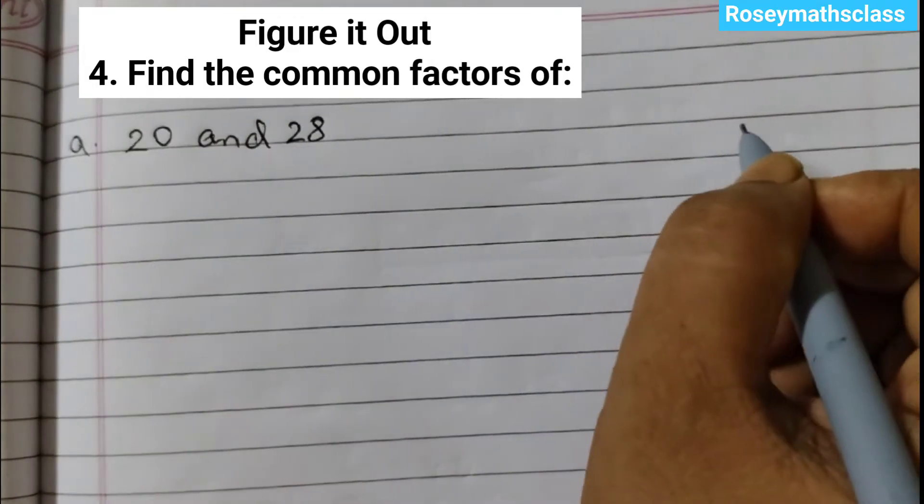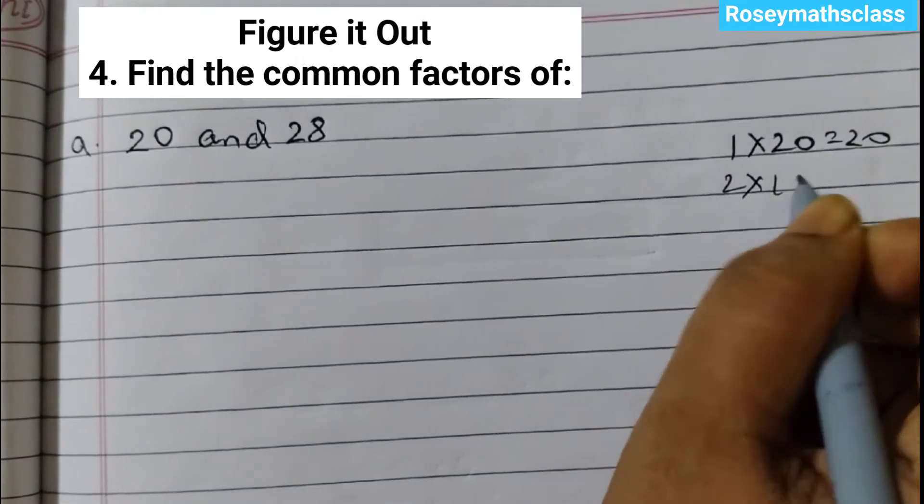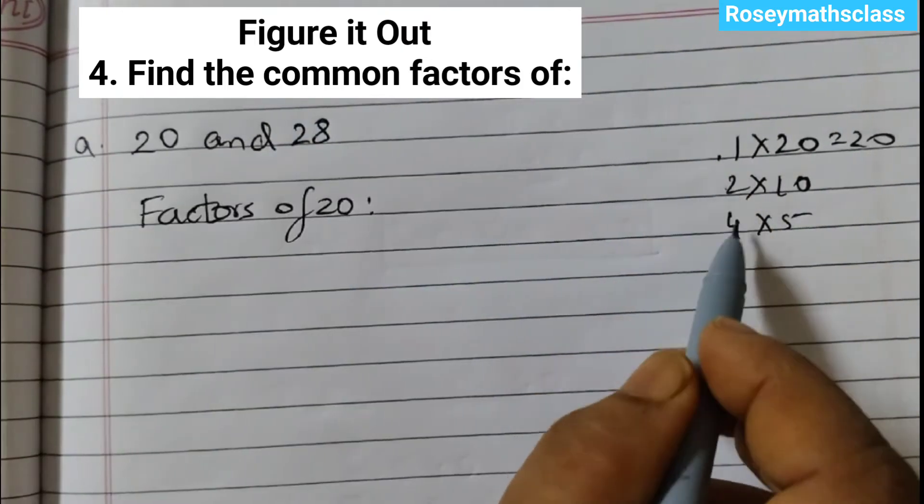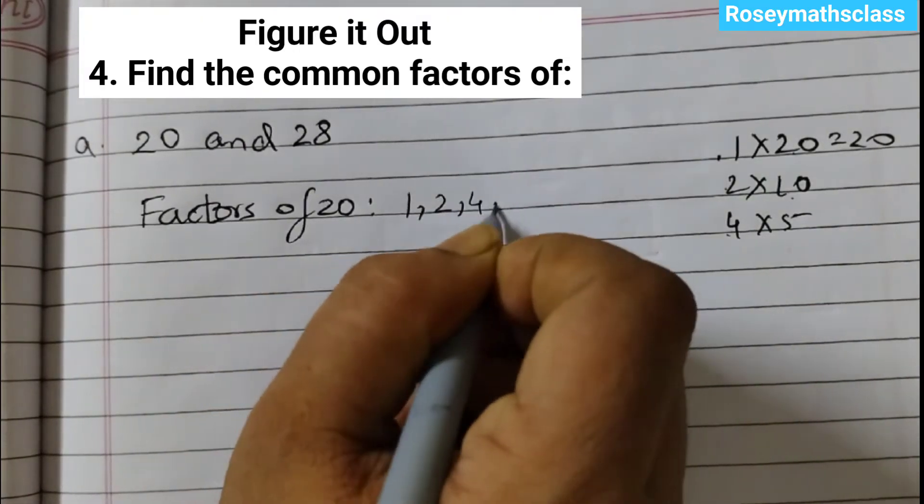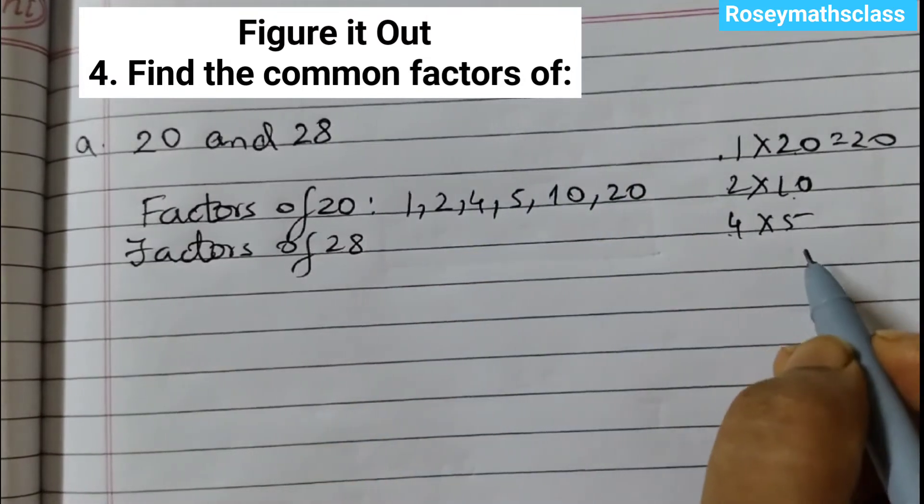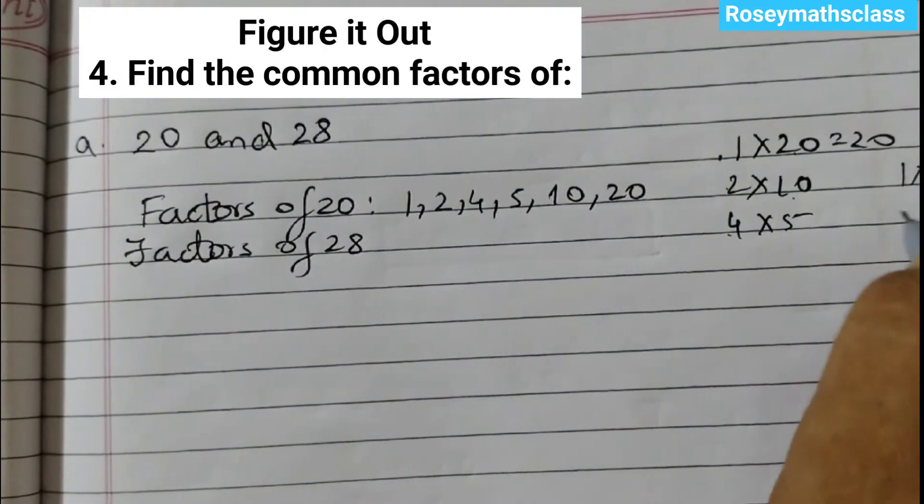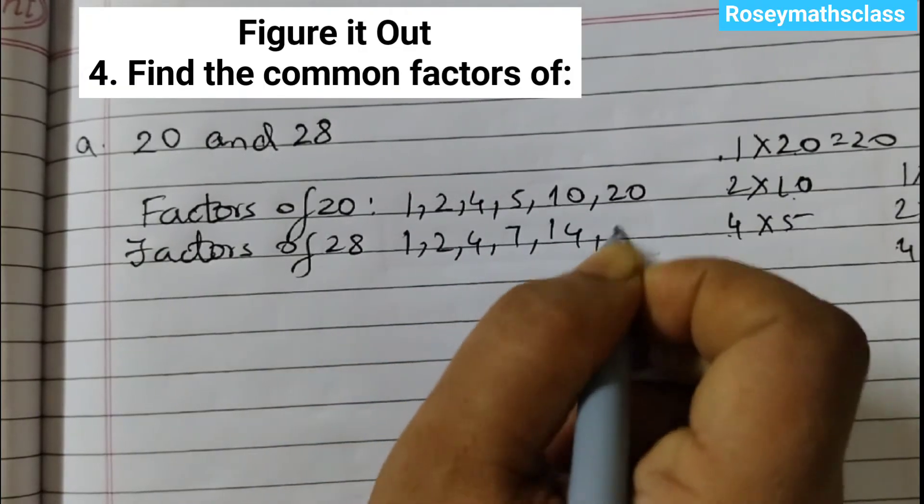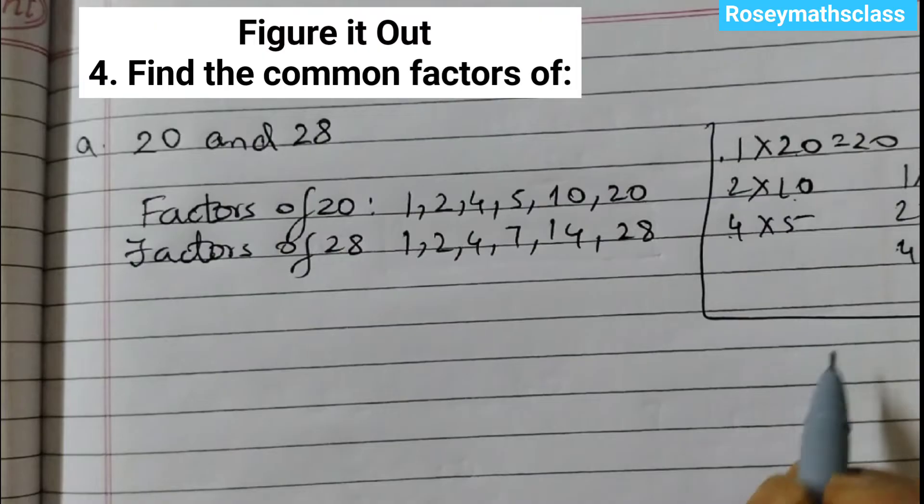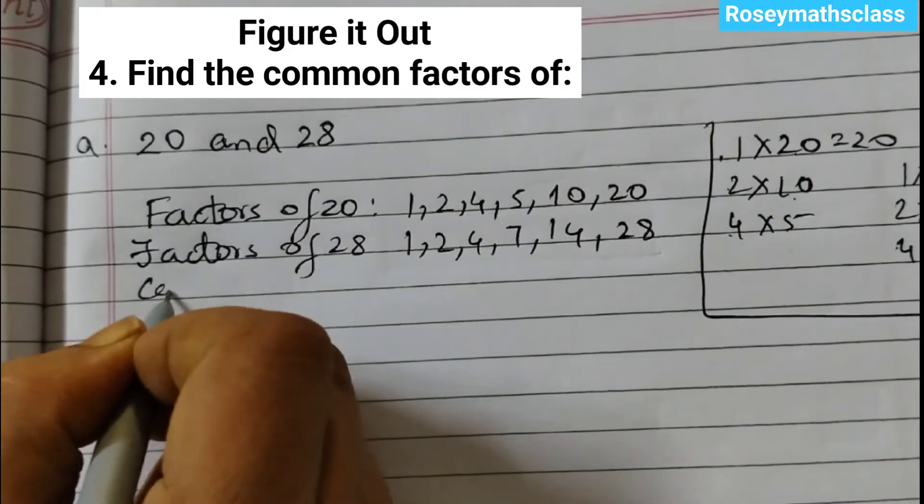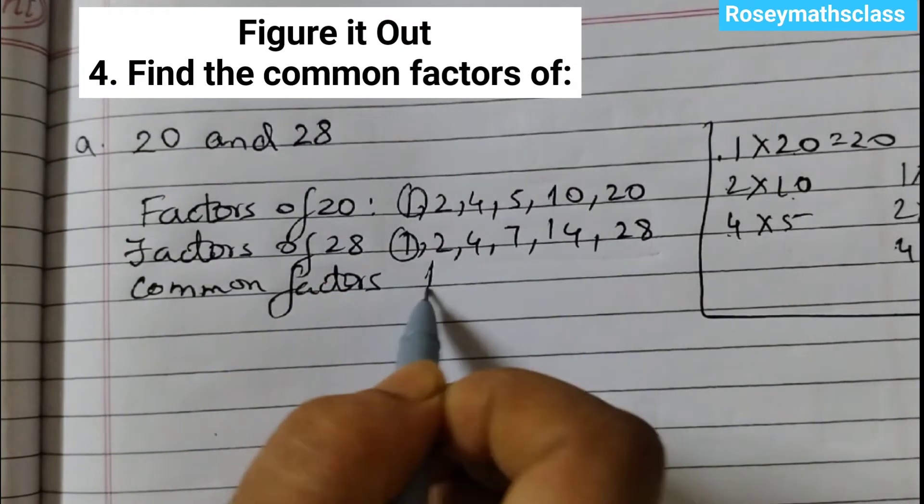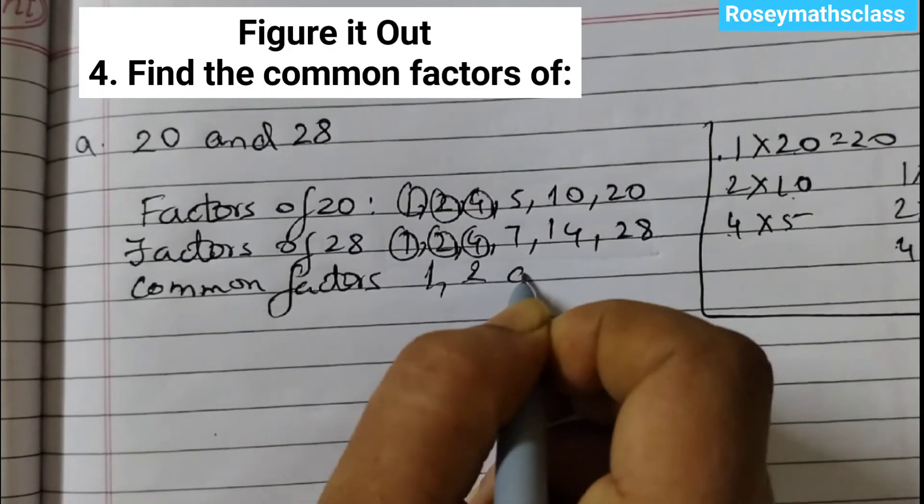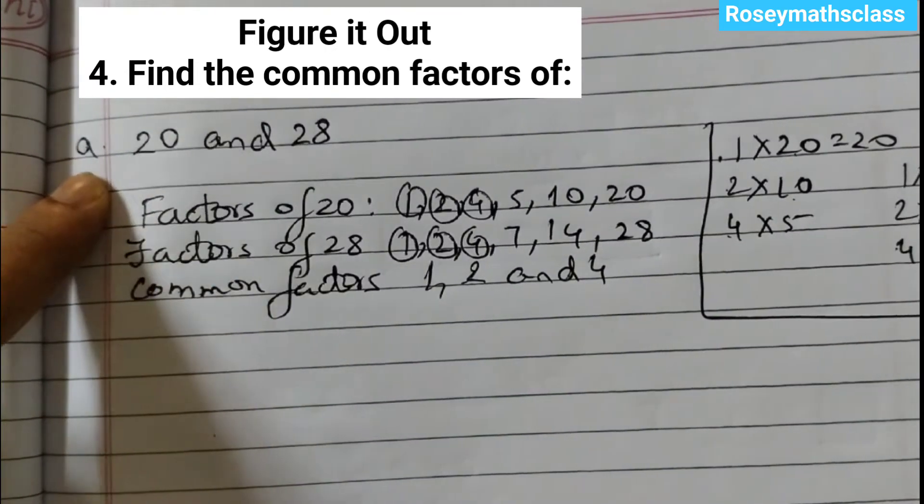So first we will find the factors of 20: 1 into 20 is 20, 2 tens are 20, 4 fives are 20. So the factors of 20 are 1, 2, 4, 5, 10, 20. Factors of 28: 1 into 28, 2 into 14, 4 into 7. So 1, 2, 4, 7, 14, 28. If you do it like this, you will not miss out any factor. So now we need to find out the common factors. The common factors are 1, 2, 4. These are the common factors of 20 and 28.